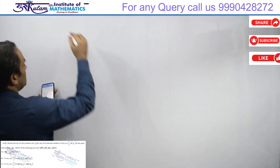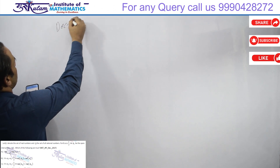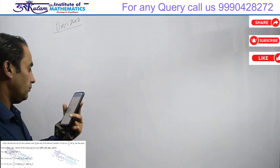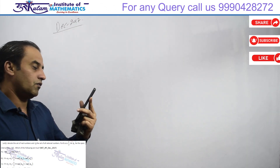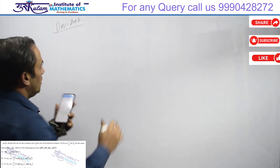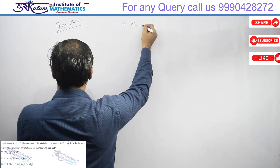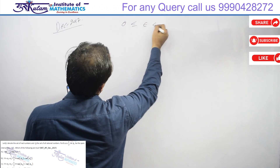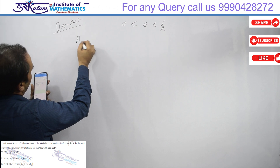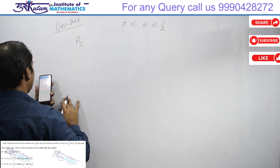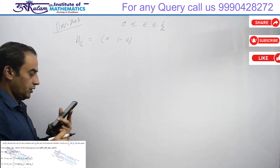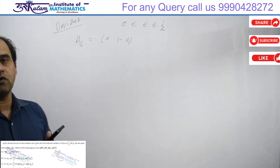This question is from December 2017, a point-set topology question. R is the set of real numbers, Q is the set of rational numbers. Given 0 < epsilon ≤ 1/2, the set A_epsilon is defined as the open interval (0, 1 - epsilon).